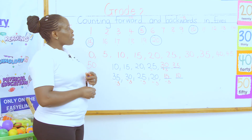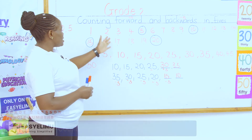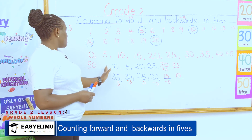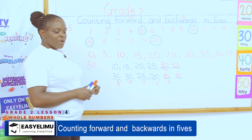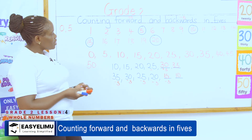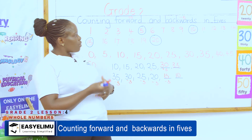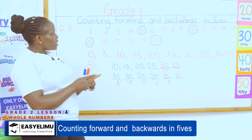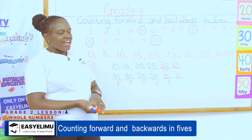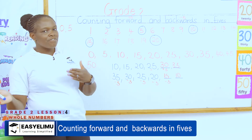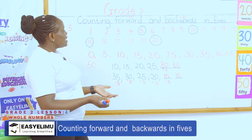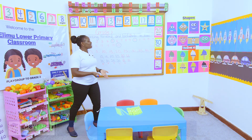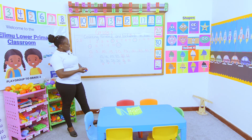Remember, these are the numbers between 0 and 50. In the next lesson, we will find out how to count forward and backwards in fives with numbers between 50 and 100. Is this easy? Can we manage? Are we together? Any questions?